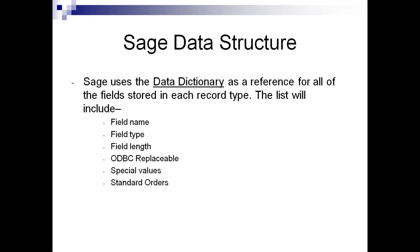We're going to jump right into the data structure within SAGE. Starting on page one of the Word document, we talk about how SAGE uses something called a data dictionary. Think of it like a phone book — it has names and addresses for where you will find the information for your report. We talked last time about the different files in SAGE: master files and transaction files, for the most part.